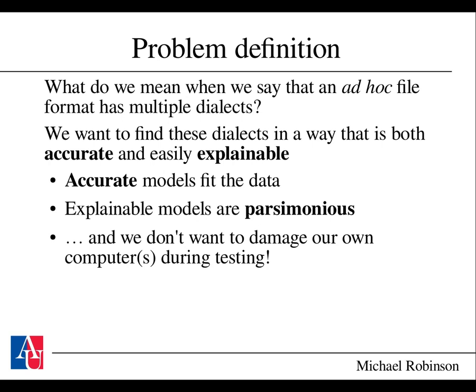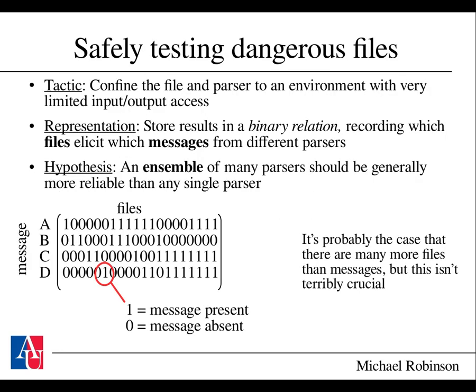Since these files can also contain malware, we don't want to risk damaging our computers. It's useful to imagine that we've limited the input and output for a parser that reads files so that it simply gives us a set of messages — either a message occurred or it didn't — for each file. You could store this in a tabular binary relation where files elicit messages from different parsers. The hypothesis, which turns out to be true, is that an ensemble of many parsers and many messages should be more reliable than any single parser.